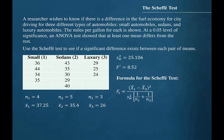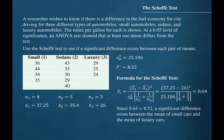Now let's compare the small cars to the luxury cars, or in other words, group 1 to group 3. When we substitute the values for these two groups into the formula, we find a test value of 8.64. Since 8.64 is greater than 8.52, a significant difference exists between the mean of small cars and the mean of luxury cars.